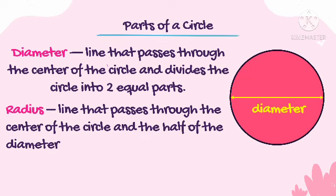Another part is the radius. The radius is the line that passes from the center of the circle and is half of the diameter. Do you remember the plural form of radius? Yes, it is radii. So when we see many radii in a circle, the plural form is radii. Remember, the radius is half of the diameter, shown here as the blue line.